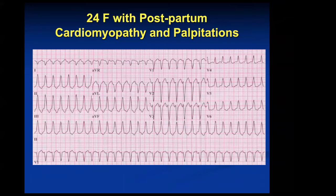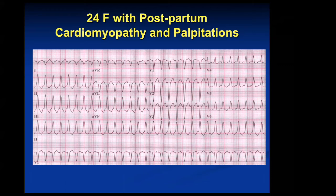If you have a wide complex tachycardia that's irregular, a big thing you can do is look at the prior EKG. VT will have a different axis — it's coming from a different place in the heart, so the axis is going to shift. In the context of a regular wide complex tachycardia with an axis shift and this history, you're almost very sure this is VT. Also, if you see a bundle branch block in sinus rhythm on the prior EKG, sometimes a wide complex tachycardia can be irregular in the context of atrial fibrillation — just something to think about.